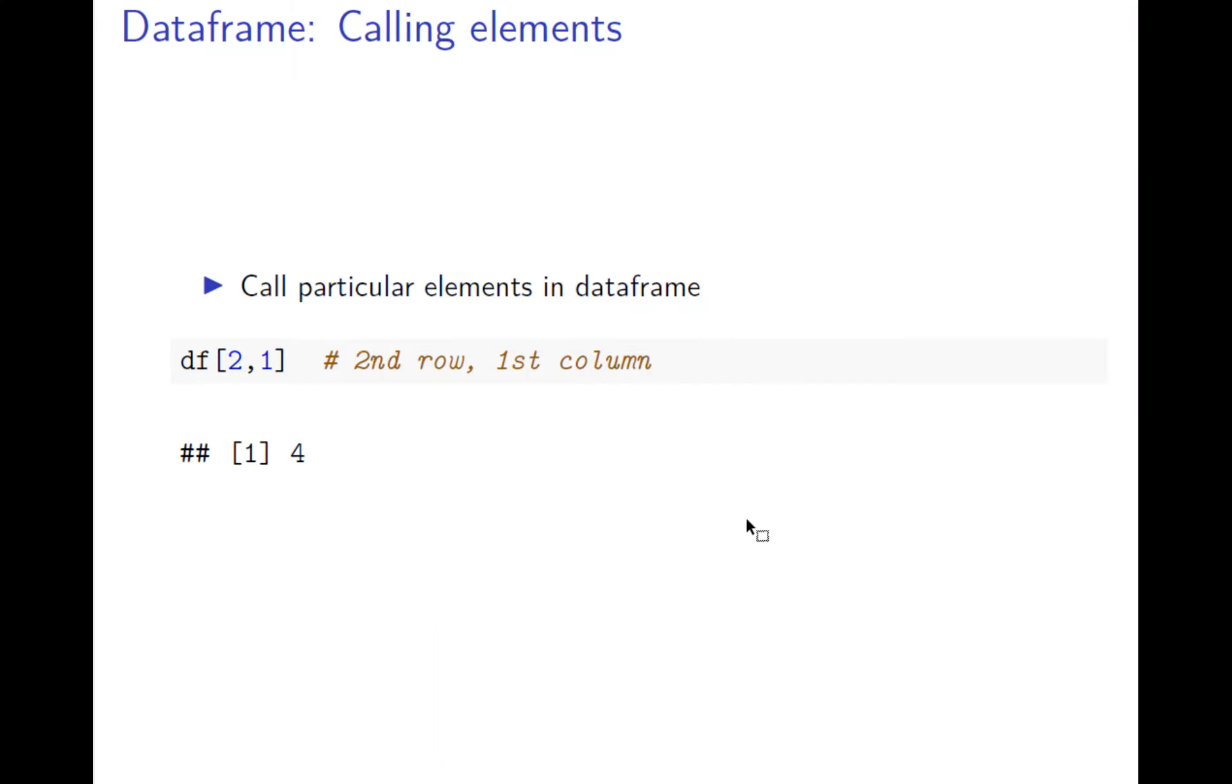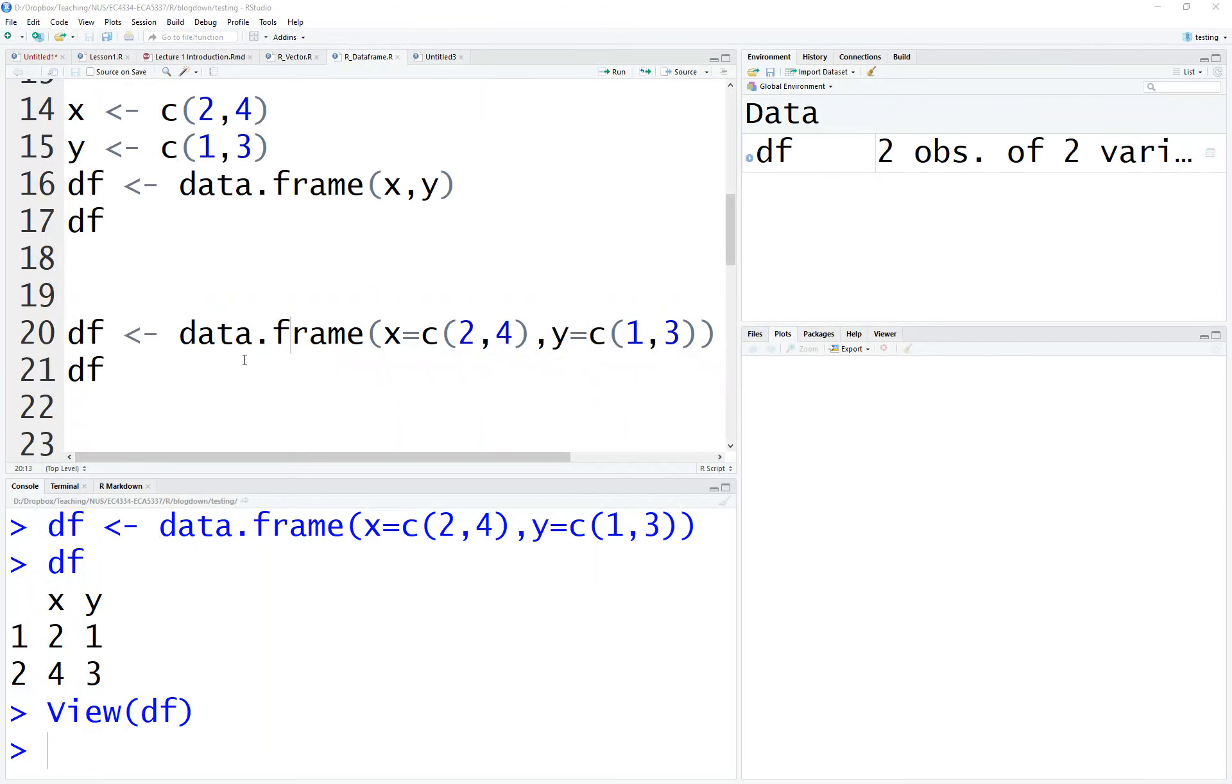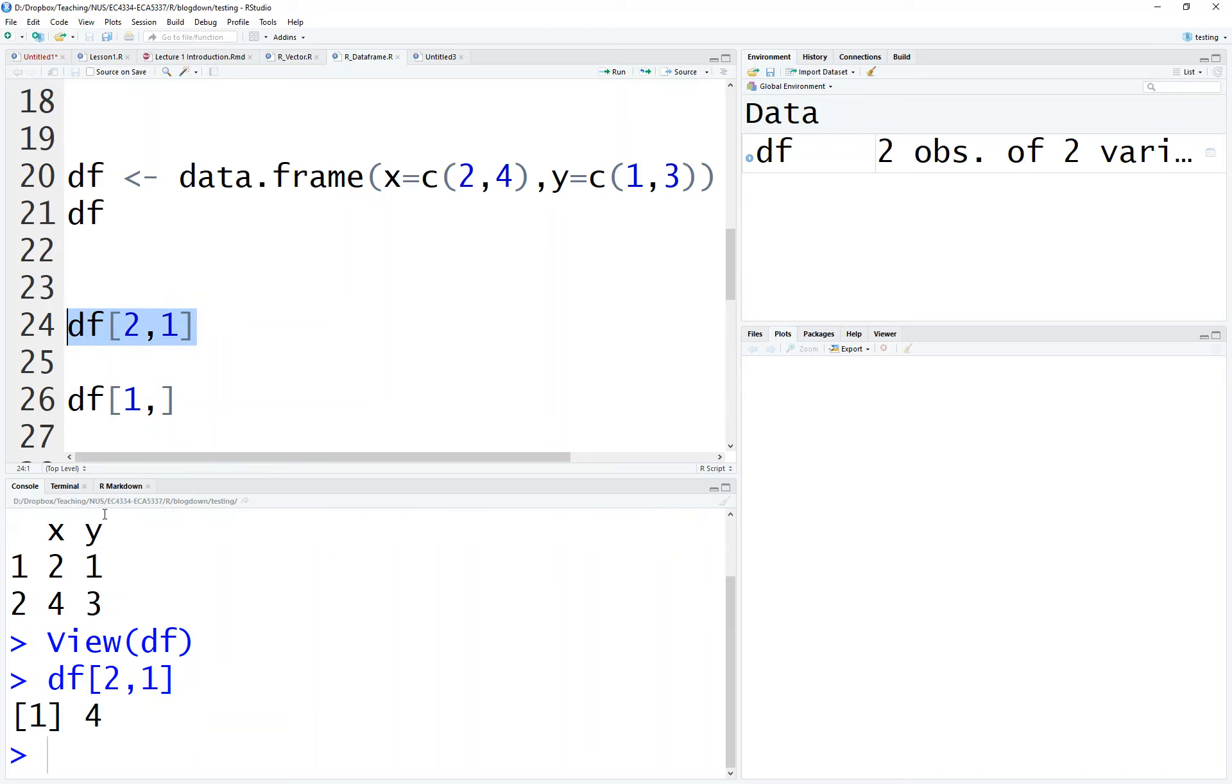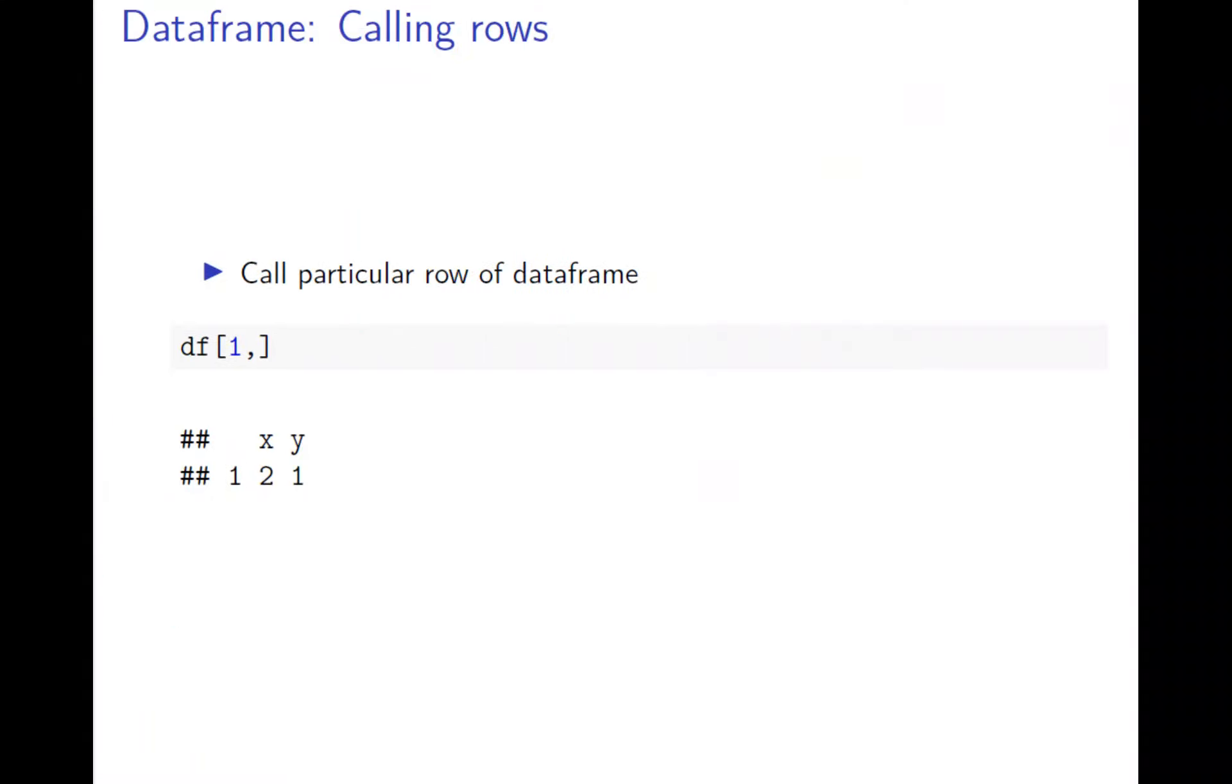The next is trying to get some element from the data frame. Again, we use the subsetting operator, which is the square bracket. We want to get the second row, first column, which will be two one. So the row first, then column. Let's see the code. We have x and y, two one four three. If you do two one, two one is the second row, first column, which gives you four.